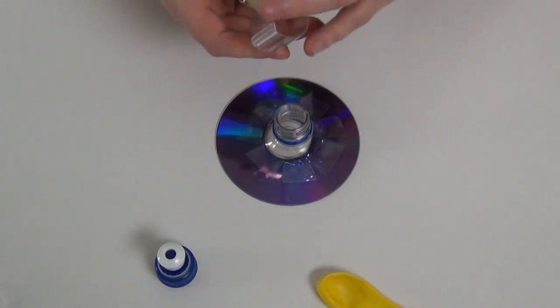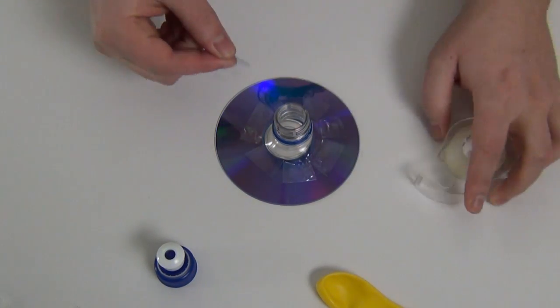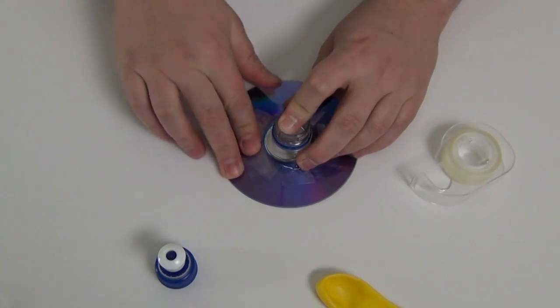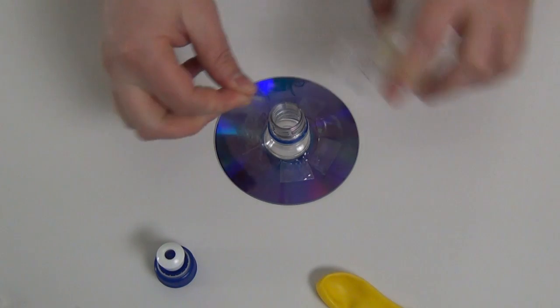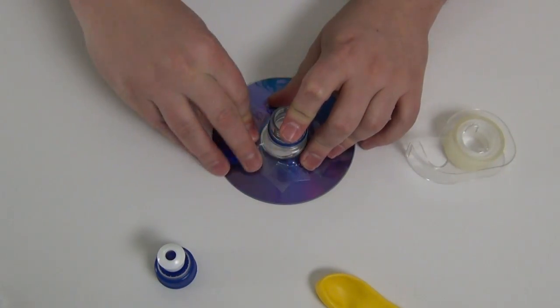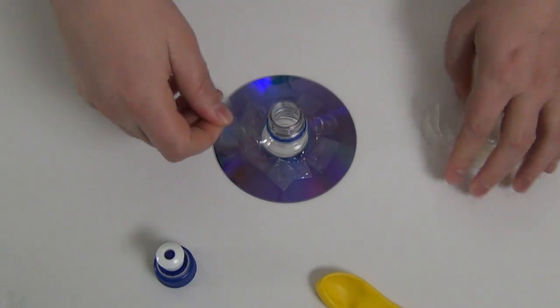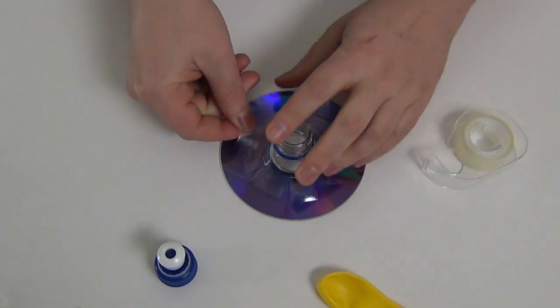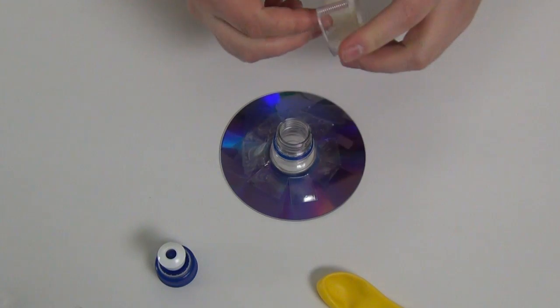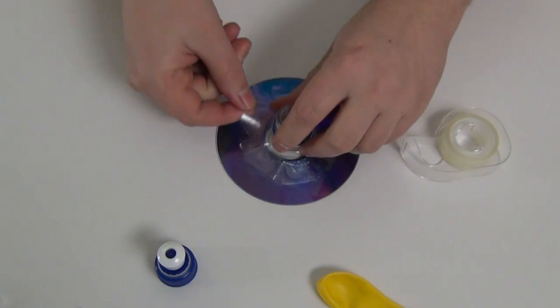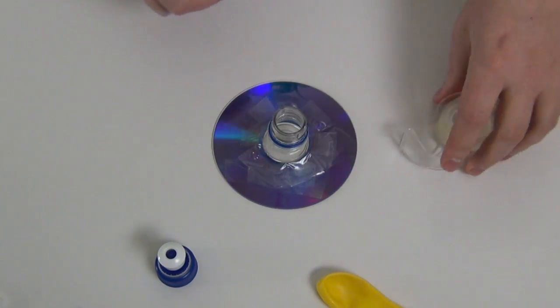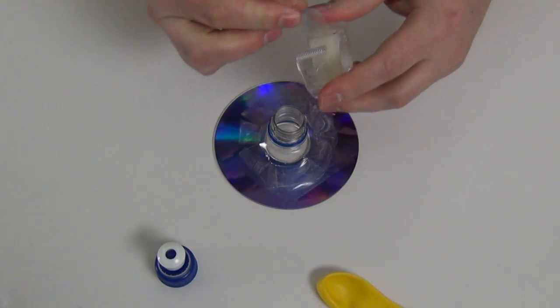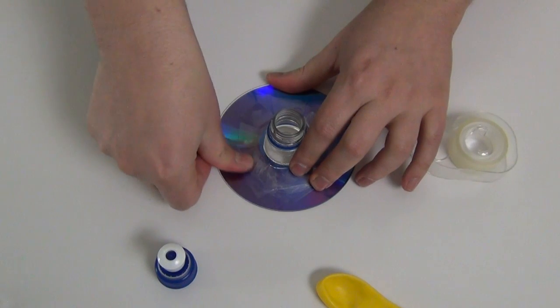Now you need to get a good seal around the edges of your CD so we're going to use a lot of tape to seal this CD and seal the top so that we don't lose any air from our balloon where we don't need it because we want all of our air to come out the bottom of the hovercraft so that it will easily move and demonstrate fluid friction.